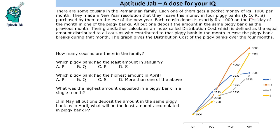Each cousin deposits exactly rupees 1000 on the first day of the month in one of the piggy banks. They can deposit in any one of the four banks available to them. All but one deposit the amount in the same piggy bank as the previous month. Understand this language — all but one means that all deposit in the same piggy bank as before, but one of them deposits in another bank.